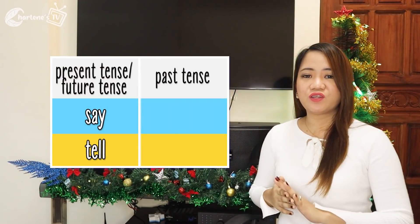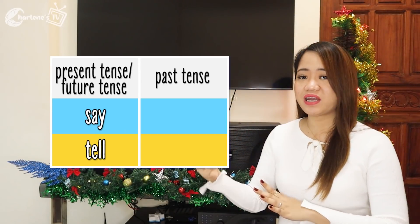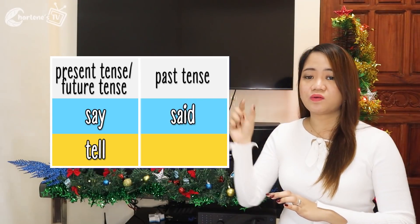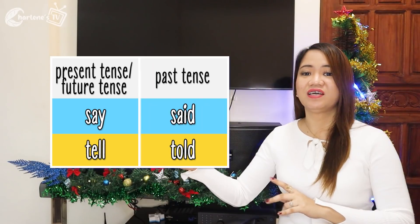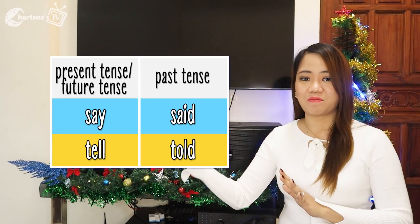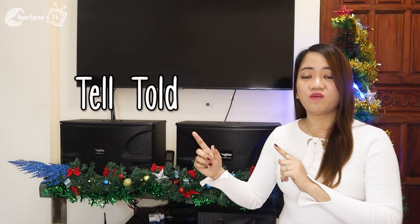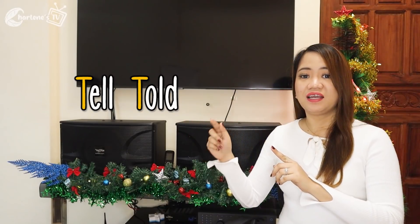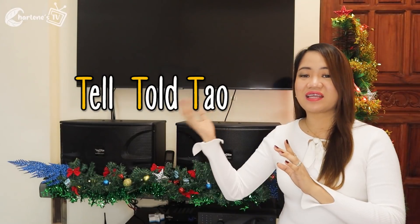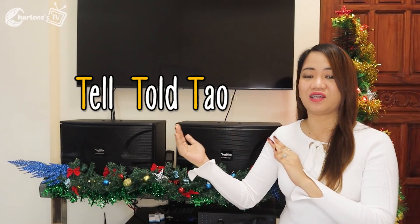Say and tell, pareho itong nasa present tense or future tense. Paano kapag tapos na yung nangyari — nagsabi na? Therefore, itong say magiging said, itong tell magiging told. Past tense na itong said saka itong told — tapos na, nagsabi na, nasabi na. Magandang palatandaan ito: tell at told, pareho nagsisimula sa letter T. Letter T — ibig sabihin ay tao. Kasunod ay tao — tell or told ang gagamitin natin, pareho nagsisimula sa letter T.